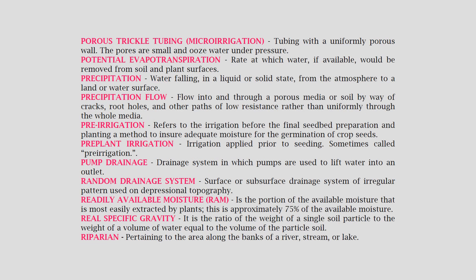Porous trickle tubing: microirrigation tubing with a uniformly porous wall; the pores are small and ooze water under pressure. Potential evapotranspiration: rate at which water, if available, would be removed from soil and plant surfaces. Precipitation: water falling in a liquid or solid state from the atmosphere to a land or water surface.